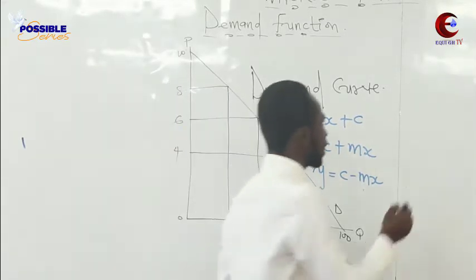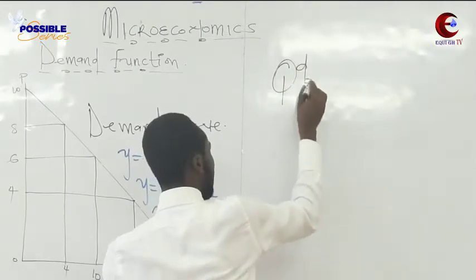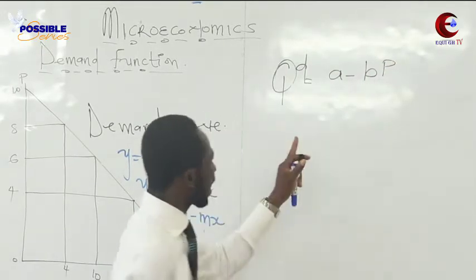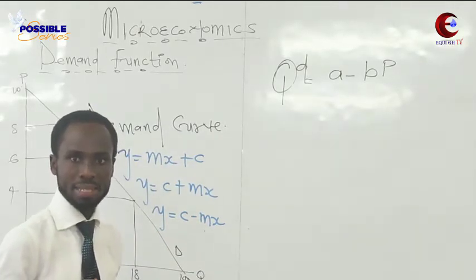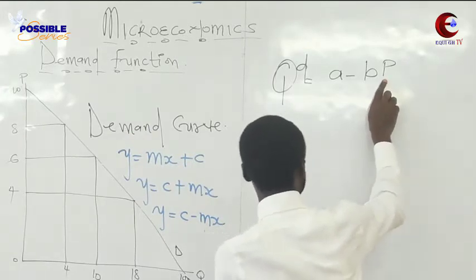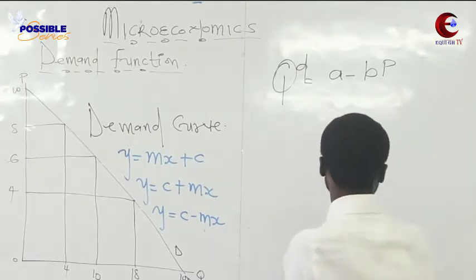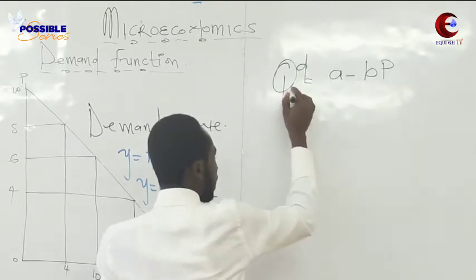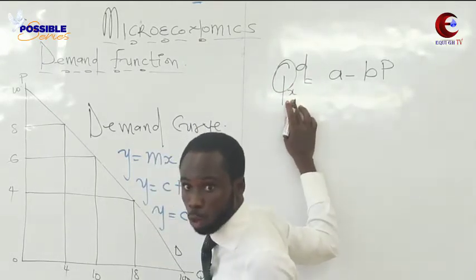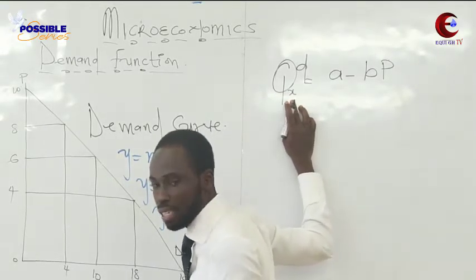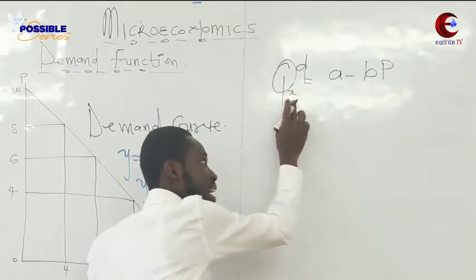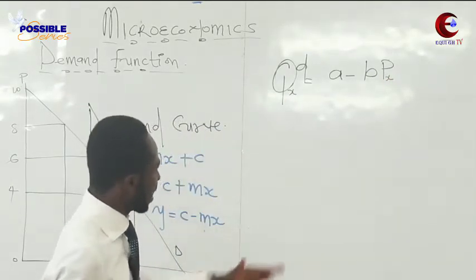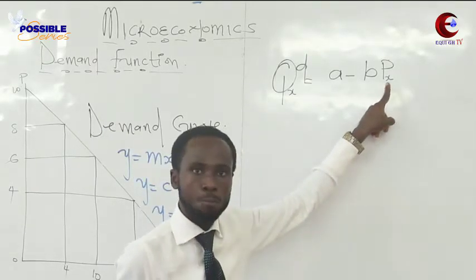From this we derive our demand function, which can be written as Q = a − bP. However, when written like this you are not done, because we don't know whether this price belongs to this commodity. To indicate that the price belongs to this commodity, we must add a subscript variable — it could be x, y, m, or any variable — and use the same subscript on both Q and P.